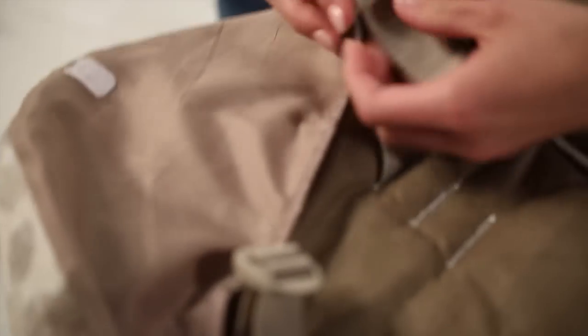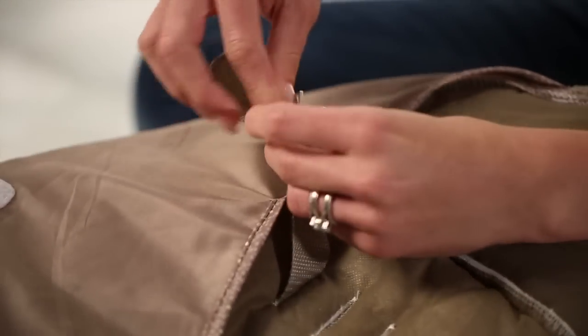In order to properly install the seat pad, you will need to first unthread the shoulder straps from their tightening buckles on the back of the seat pad.